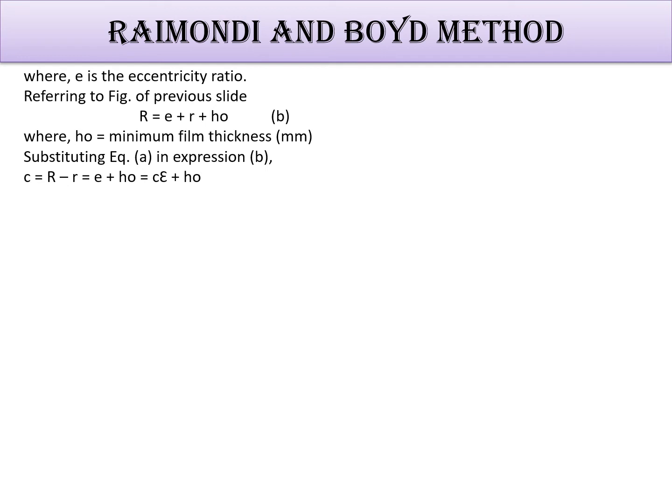Where e is the eccentricity ratio. Capital R equals e plus small r, so h₀ equals minimum film thickness. Now substituting this value in the previous equations, we get these terms. That is, c equals capital R minus r. In these terms we put it, we get this term.